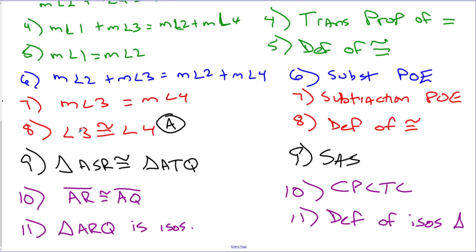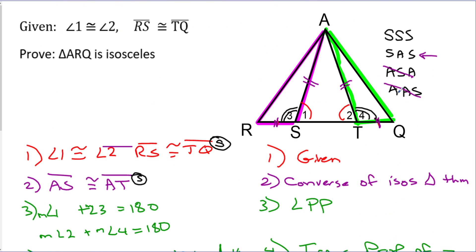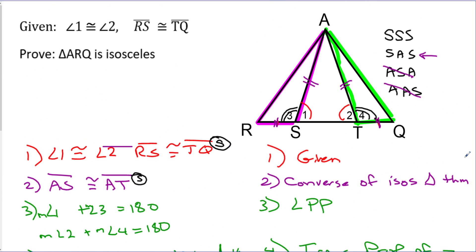So this was a fairly hefty problem. You had to do a lot of preplanning and figuring out what you even needed to prove. In this case, AR is congruent to AQ, and we had to use the inner triangle to get one set of sides, and the linear pair postulate and transitive property to get the angles.